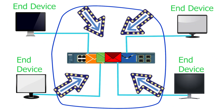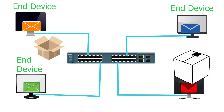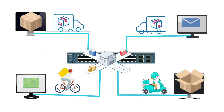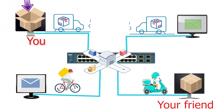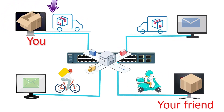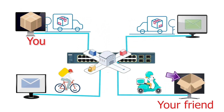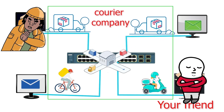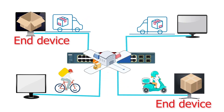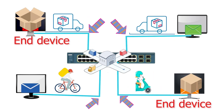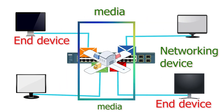Moving data to another device is the responsibility of the media and networking devices. An end device needs to know how to pack data for the network. It works similarly to a parcel service in real life. You want to send a gift to your friend who lives in another city. You pack the gift in a parcel and give it to a courier company. The courier company transports your parcel to the city where your friend resides and delivers it to him, and your friend unpacks the parcel and receives his gift. You and your friend do not need to know how the courier company transports your parcel. In a computer network, you and your friend are end devices, the path the courier company takes is the media, and the warehouse where it filters and processes your parcel is an example of a networking device.